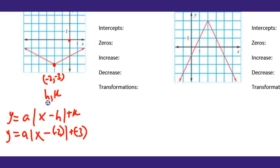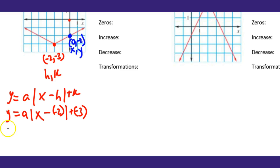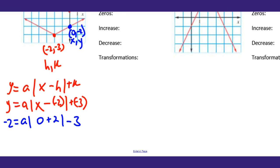Now I need to pick a point so I can solve for a. I see this point right here with a zero in it — that point is (0, -2). I'll use that as my x and y. So I plug that into my equation for x and y: y = -2, x = 0, and then negative minus negative is positive 2, minus 3. Then I solve to complete the equation.